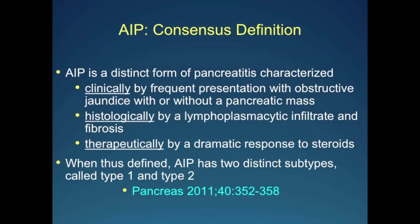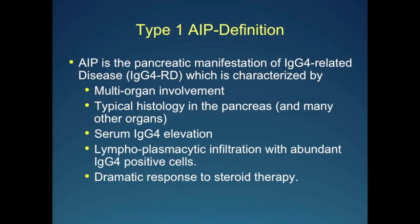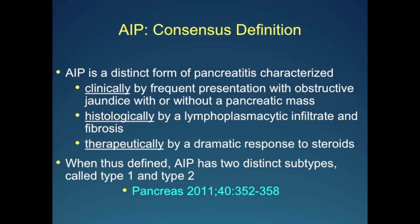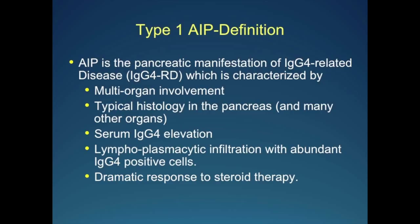When you define AIP in this manner, there are clearly two distinct subtypes, and we call them type 1 and type 2. Type 1 is the pancreatic manifestation of what's called IgG4-related disease.